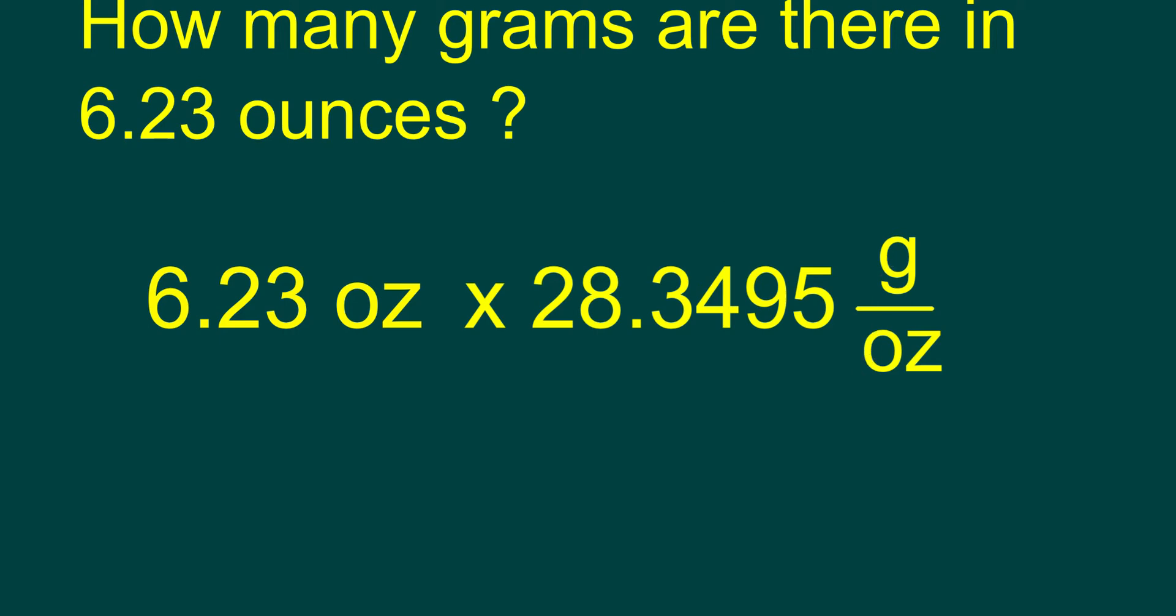Because we have ounces on the top and ounces on the bottom, they actually cancel off, and then the only unit left is grams. Multiply 6.23 times 28.3495, and we get 176.62 grams.